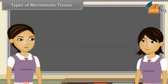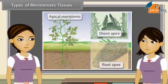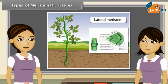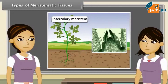Depending on the region where they are present, meristematic tissues are classified as apical, lateral and intercalary. The tissues present in the growing tips of stems and roots are known as apical meristem. The tissues present on the lateral side of roots and stems are lateral meristem. The tissues which lie on the base of internodes of stem are called intercalary meristem.